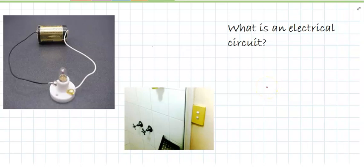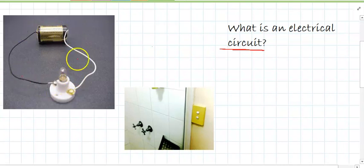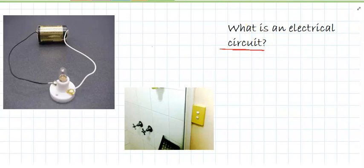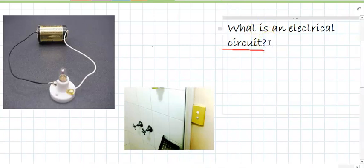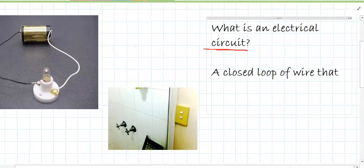Hey everybody! So, the big question for this video is: what is an electrical circuit? You've probably heard the word circuit before, but circuits are just a closed loop of wire that electricity can pass through. That's the definition we'll use — a closed loop or circuit of wire that electricity can pass through.